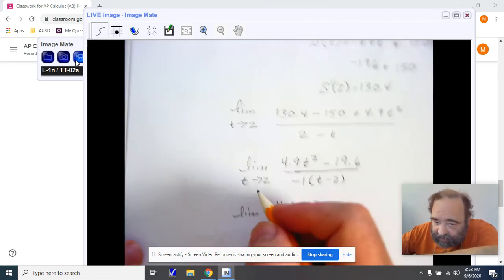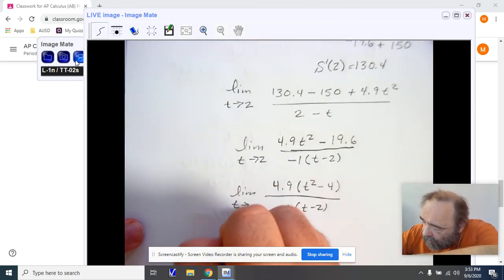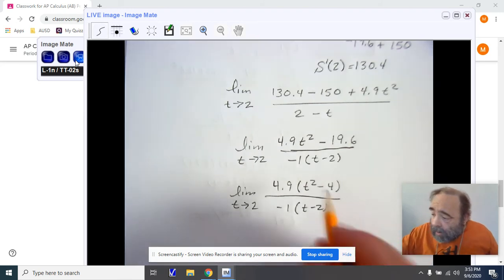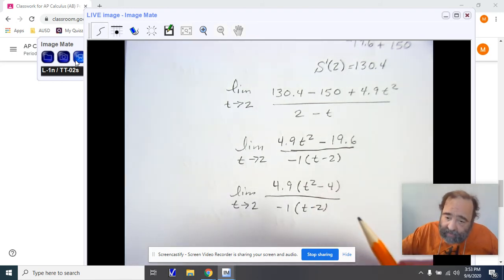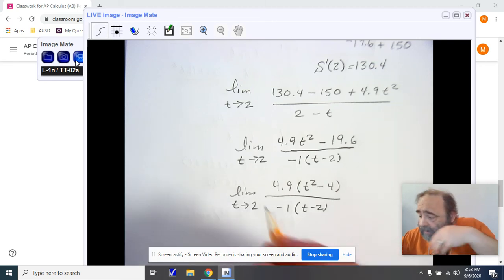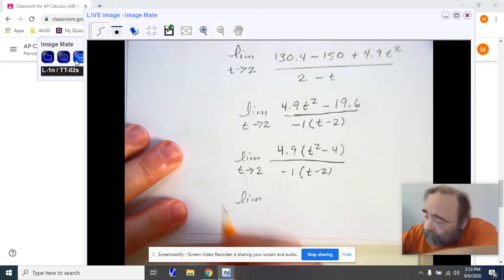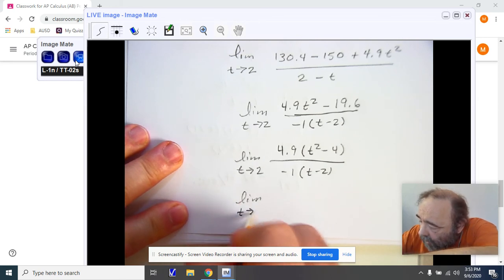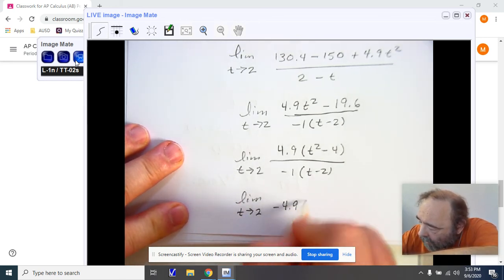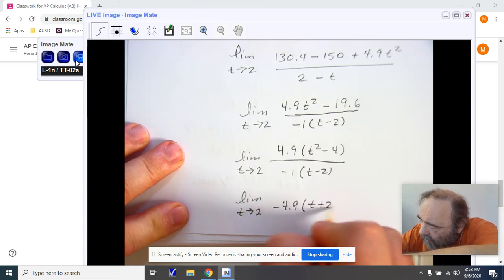I'm sure you can see this, for the limit as t approaches 2. Now, we know this is going to reduce. That is t plus 2, t minus 2. It's going to cancel out with the t minus 2, and we're looking at the limit as t is approaching 2 for negative 4.9(t plus 2).